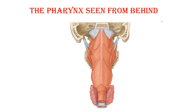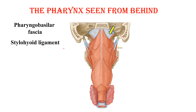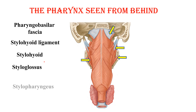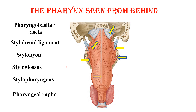Let us see the pharynx from behind. This is a clear model showing the pharyngeal basilar fascia, the superior constrictor — which is not complete above and is completed by this fascia to the base of the skull. That is the stylohyoid ligament, the stylohyoid muscle, the styloglossus muscle, the hyoglossus, and the stylopharyngeus muscle — these are the three styloid muscles: the stylohyoid, the styloglossus, and the stylopharyngeus.